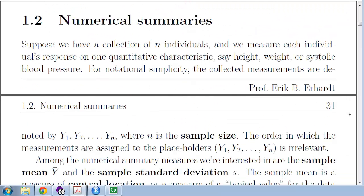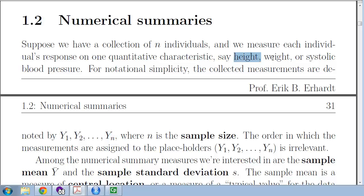Numerical summaries — this should all be review for you. Let n represent the sample size: we have drawn a sample from a larger population in order to learn something about that population. The notation Y1 is the first observation, Y2 the second, and so on up to Yn, the last observation. These variables take numbers such as a person's height, weight, or systolic blood pressure.